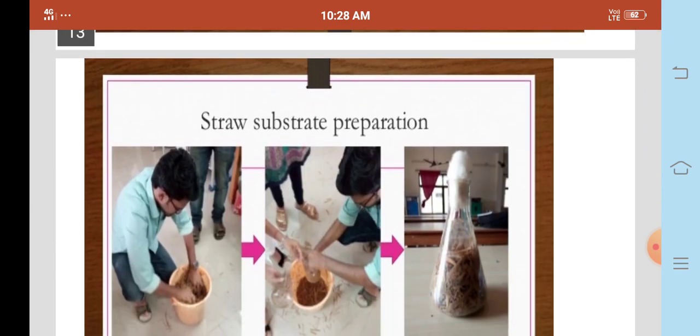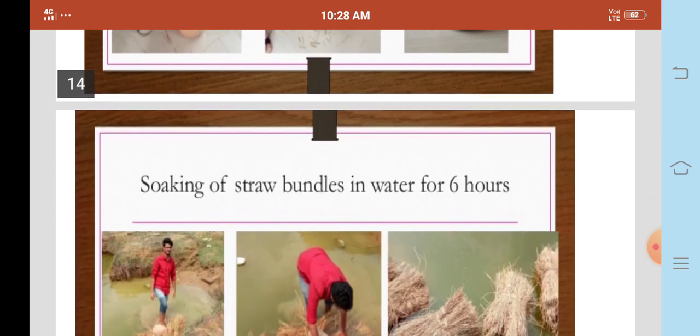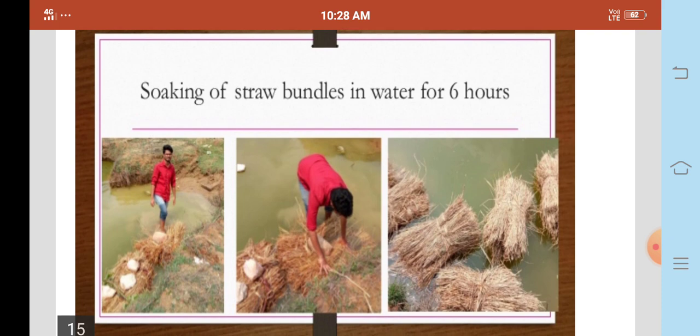Straw substrate preparation. Straw substrate is prepared by soaking in water for six hours.